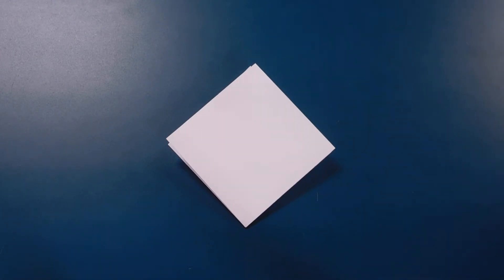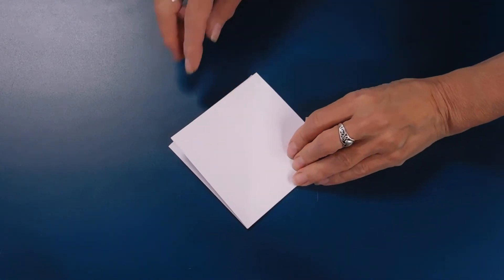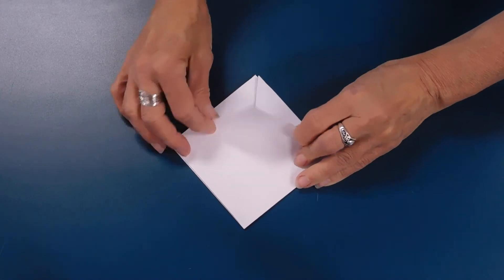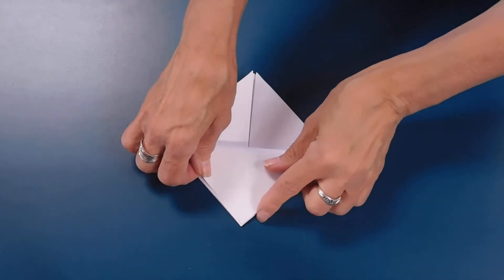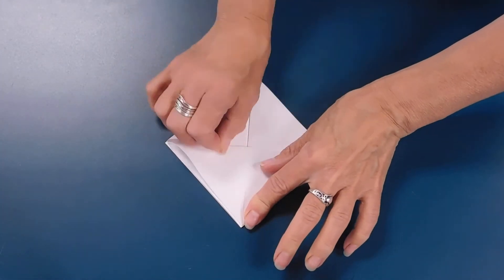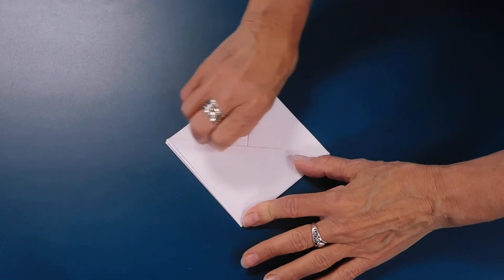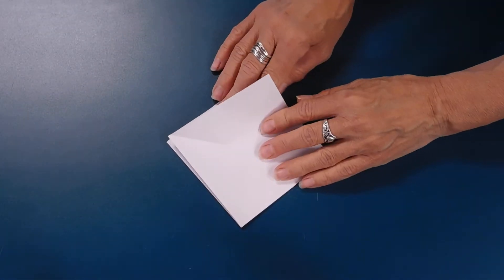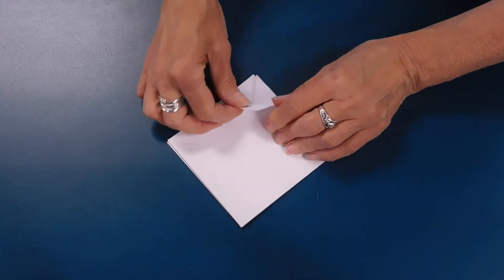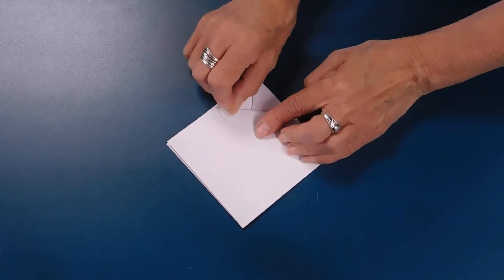So now we are going to take this top layer and fold that top point down to the bottom point. And we're going to crease it. We are going to reopen it. We're going to fold the top point to the middle crease.